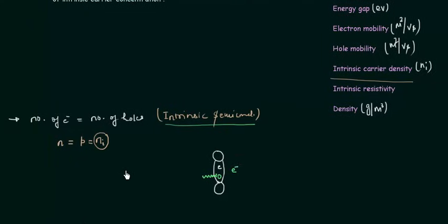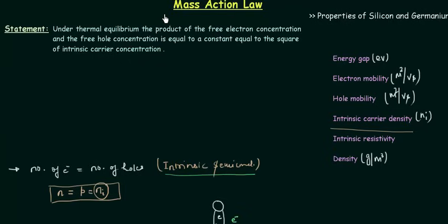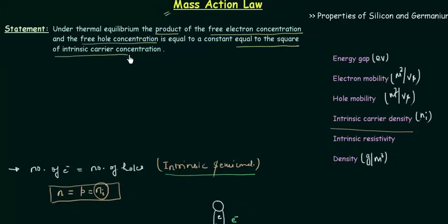What happens when we introduce the impurity atom — pentavalent or trivalent? This relation is not going to be the same, because when you introduce trivalent impurity you have excess of holes in the lattice, and hence the number of holes is greater compared to the number of electrons. Similarly, when you introduce pentavalent impurity you have more electrons compared to the number of holes. The relation between the electron concentration and the hole concentration is given by a very fundamental law in semiconductor physics that we call the mass action law. Under thermal equilibrium, the product of the free electron concentration and the free hole concentration is constant, and that constant is equal to the square of the intrinsic carrier concentration.